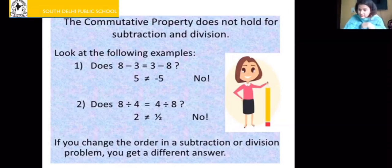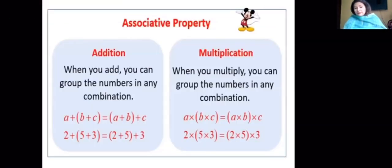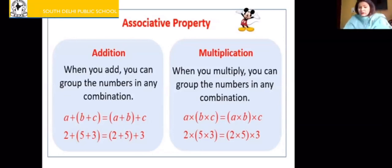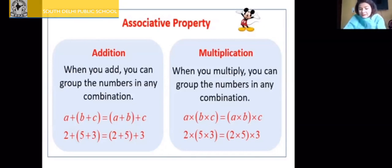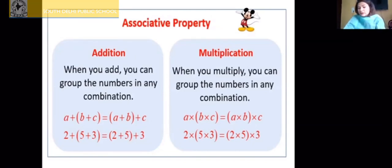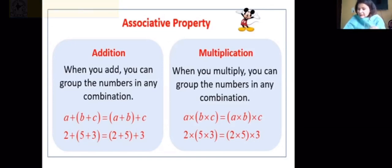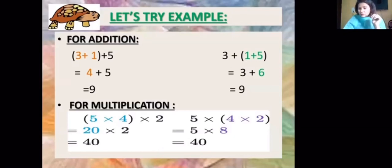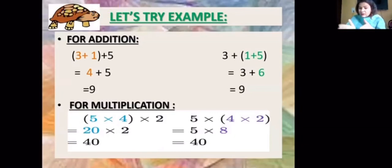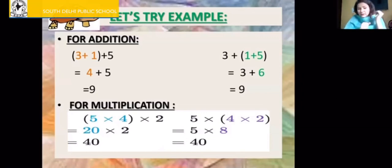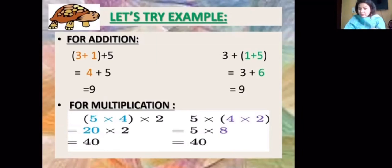Now let's move to associative property. When you add integers, you can group the numbers in any combination: a plus (b plus c) equals (a plus b) plus c. In multiplication also, you can group numbers in any combination with no change in the result. For example: 3 plus 1 plus 5 — grouping 3 plus 1 first gives 4 plus 5 equals 9. On the right side, grouping 1 plus 5 gives 3 plus 6, which is also 9. So associative property holds for addition.